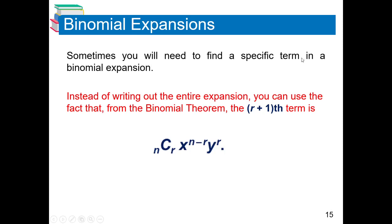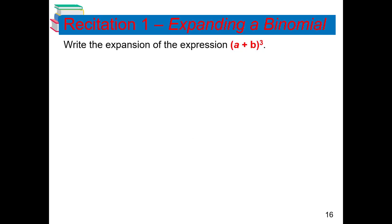Sometimes you need to find a specific term in a binomial expansion. Instead of writing out the entire expansion, we use the (r + 1)th term formula: nCr · xⁿ⁻ʳ · yʳ. Before I continue discussing this, you need to do a recitation first. I'll give you 30 minutes. Upload your work to Google Classroom. You have to find the expansion of (A + B)⁹.